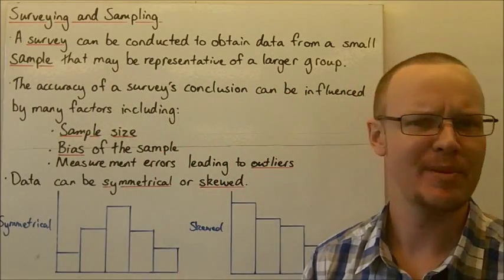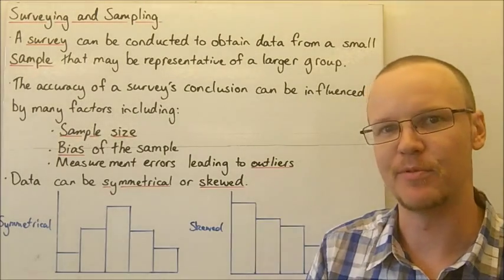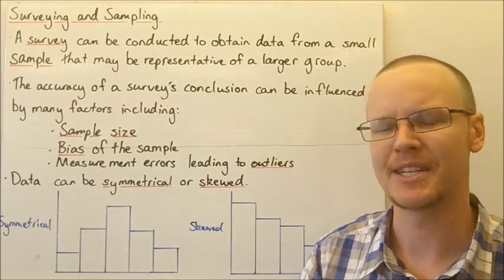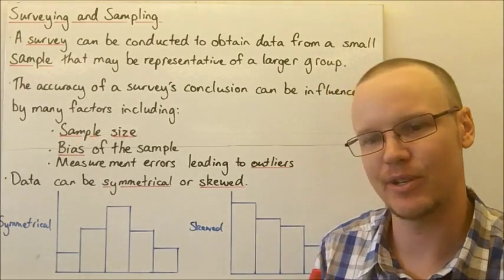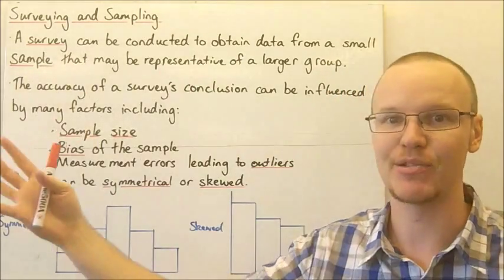The reason that we might want to do this is we might want to get some information about a group of people or objects, a group of things. Finding a sample, a smaller amount, a smaller group within that larger group, is much easier and less time consuming to survey.